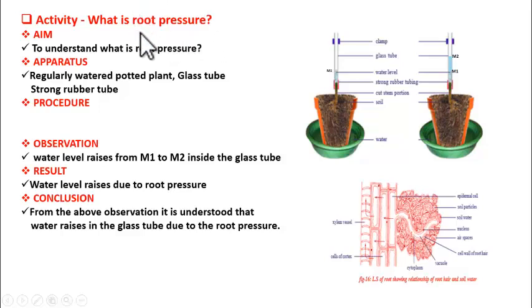Students, in our previous video we have already defined root pressure. It is the pressure exerted by the water coming from root hairs in the xylem vessels. This pressure is responsible for the movement of water in the xylem vessels from the roots to all parts of the plant.